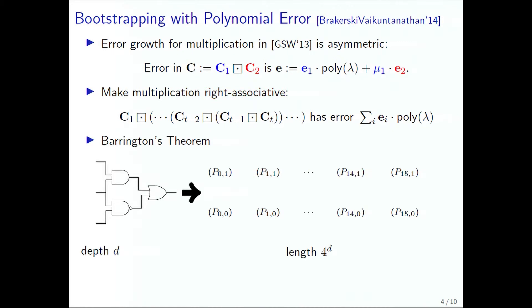How does this help us bootstrap? We use the magic of Barrington's theorem. Barrington's theorem takes a depth-d binary circuit and converts it into a 4 to the d permutation branching program, which can be seen as two long chains of permutation matrices. The same low error growth that works for single ciphertext also works for permutation matrices, so if we multiply these in a right associative manner, we also get polynomial error growth, which allows us to bootstrap with only polynomial error growth.